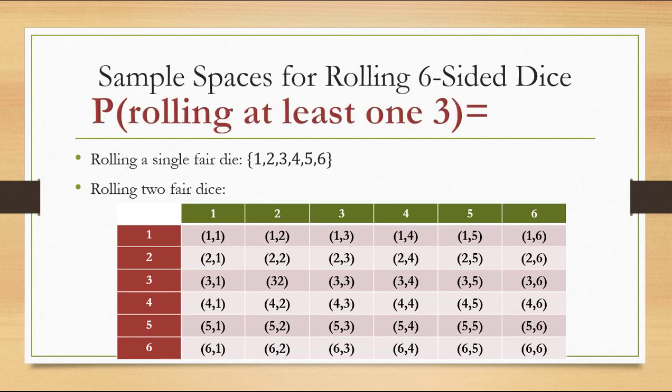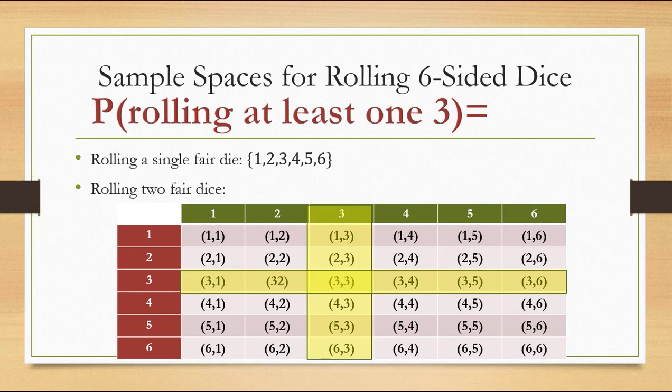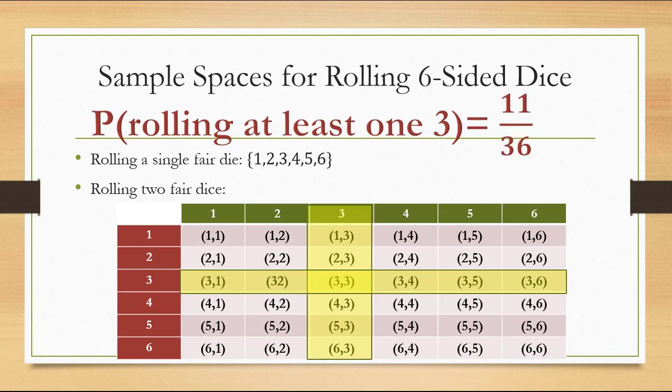We can use this table anytime we have to find a probability related to rolling two dice. So if I asked you to find the probability of rolling at least one three when you roll two dice, refer to the table so that you don't undercount or overcount. Where do we see rolls that have threes? There's the row and column that contain threes. Each of those outcomes has at least one three — make sure not to count the double-three twice, it only occurs once. So we have 11 different outcomes with at least one three out of 36 total possibilities, giving a probability of 11 over 36.